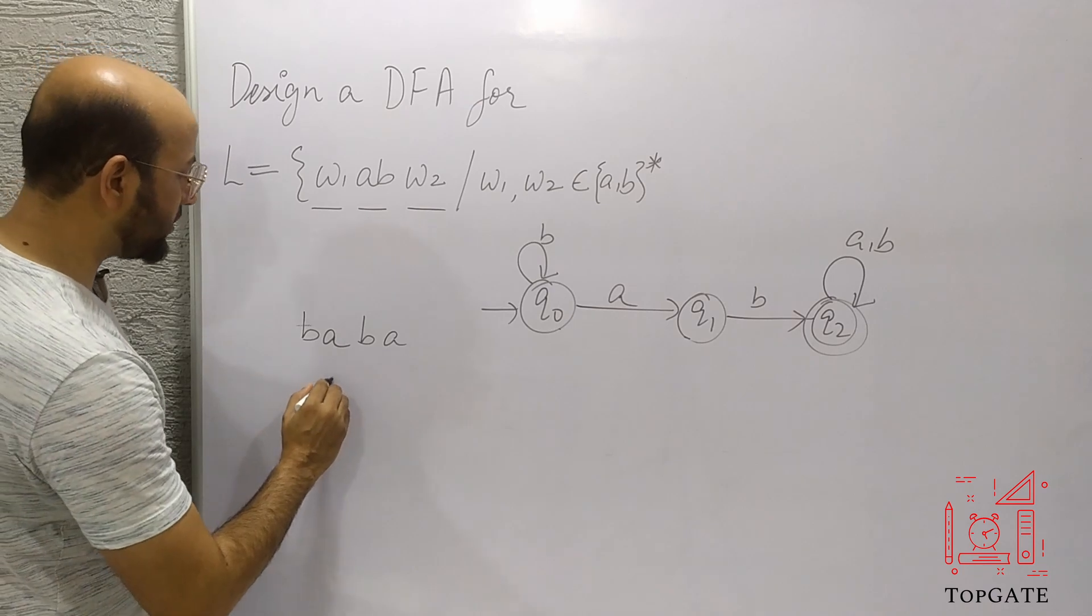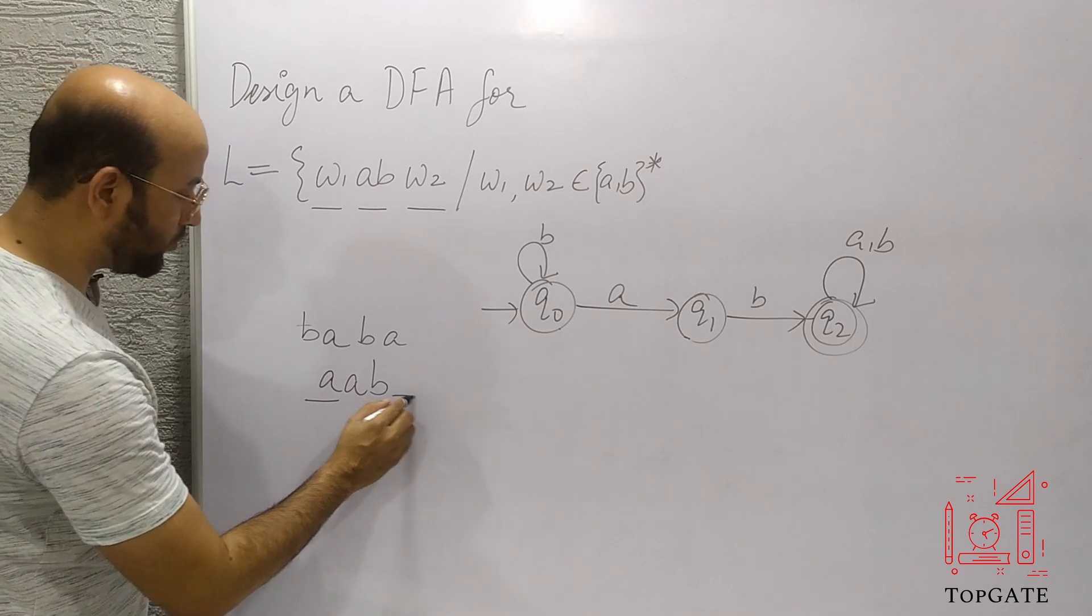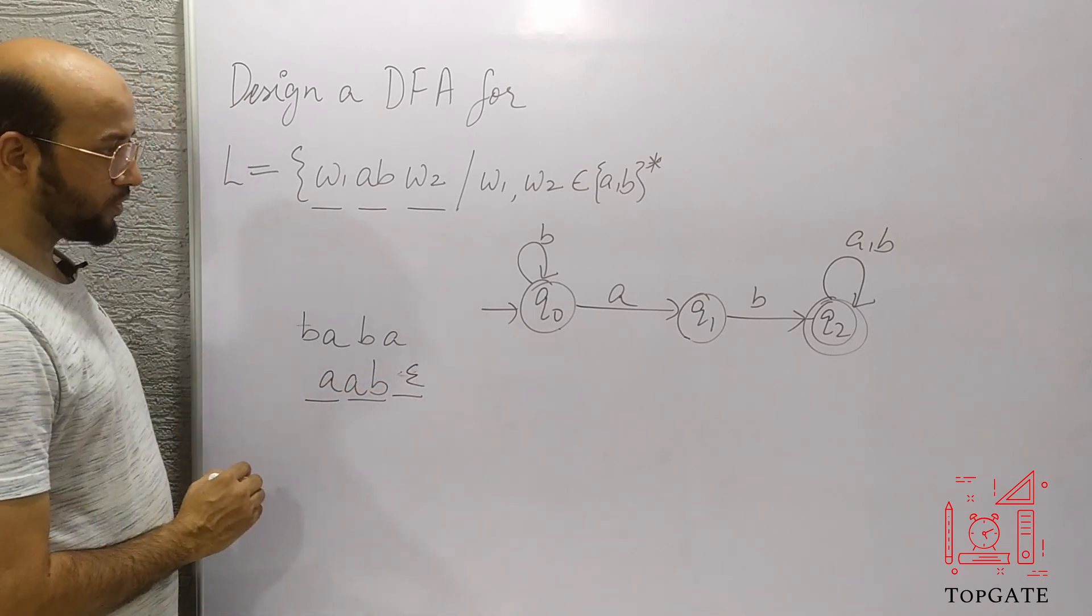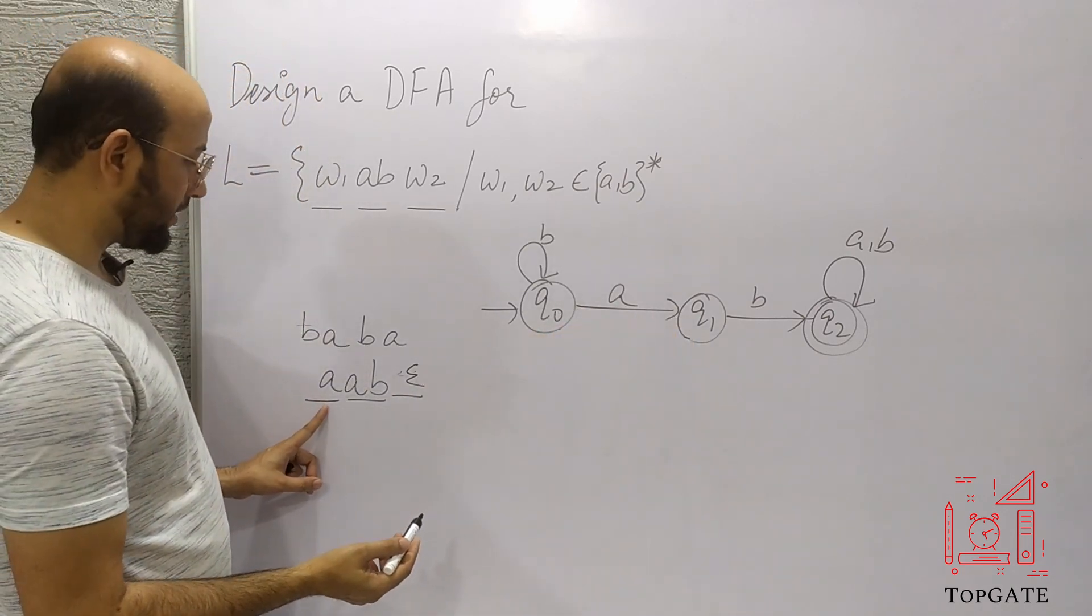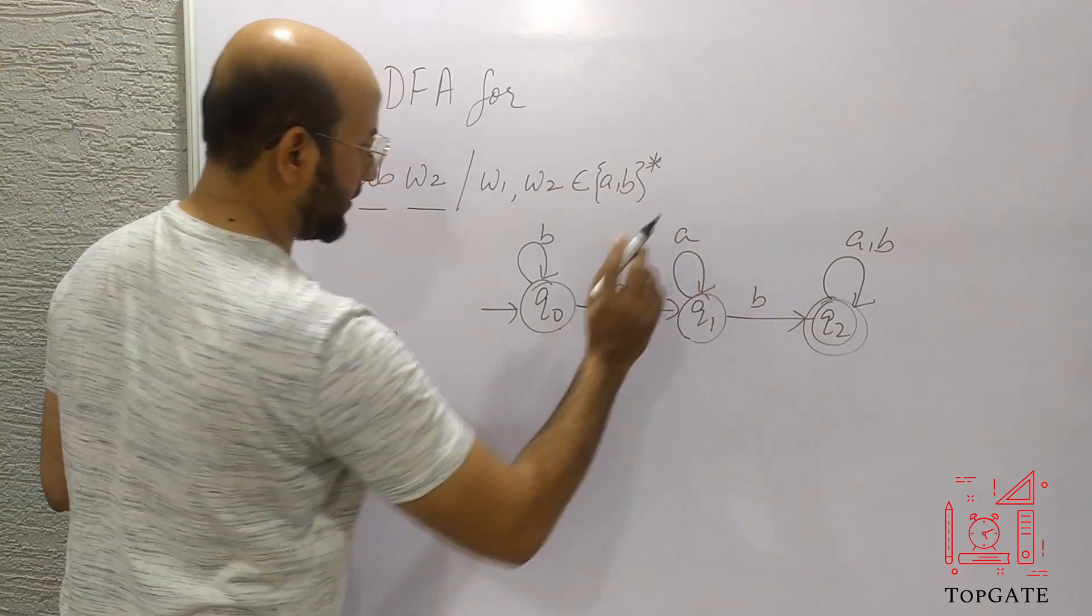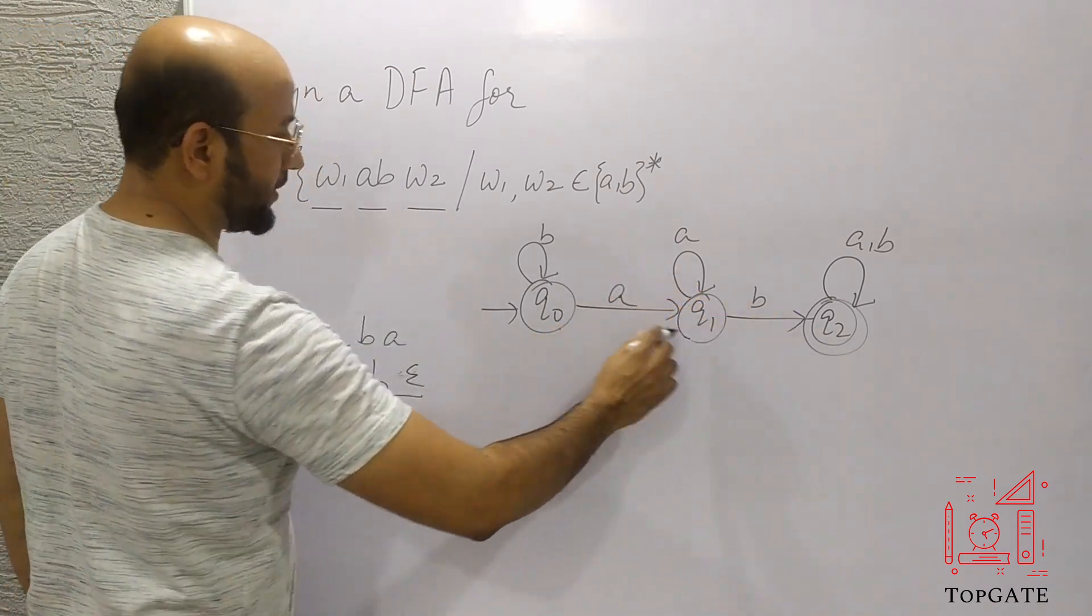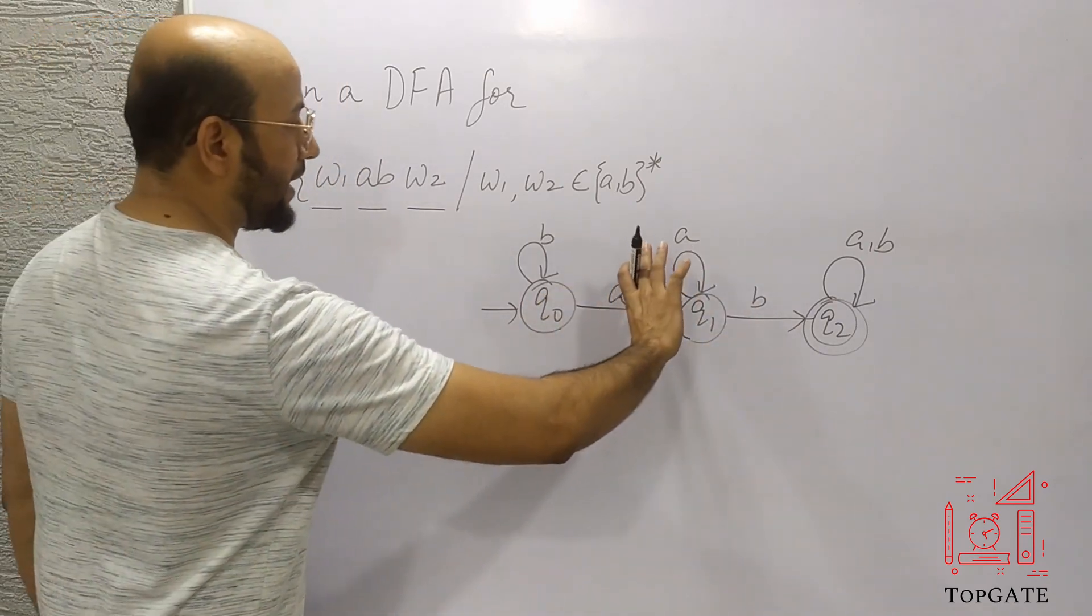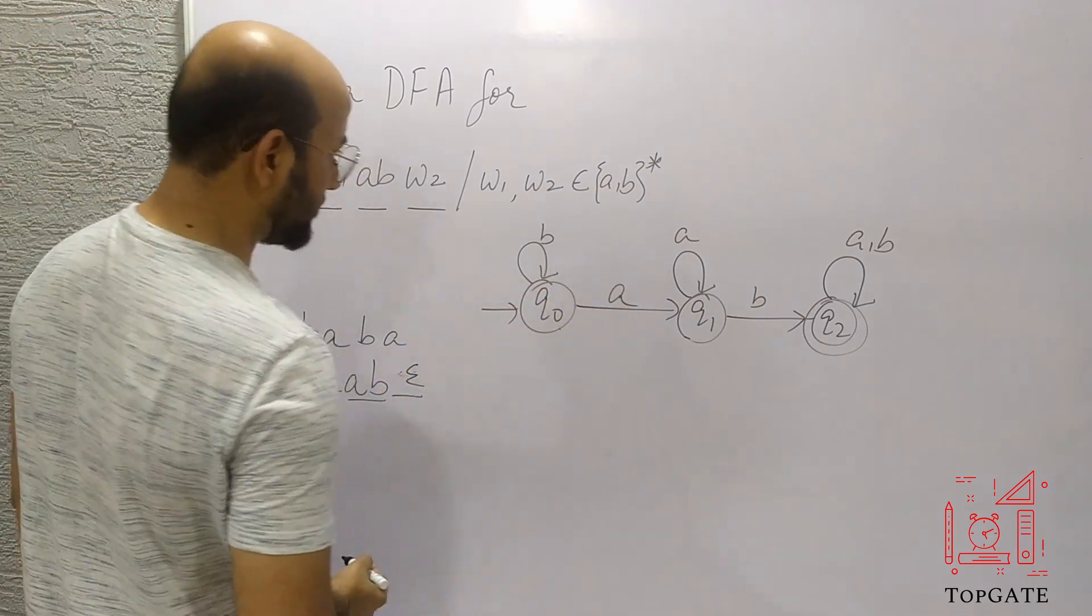Now suppose I have the string as AAB. That is, this is your W1 and W2 is null. So W2 is null and this is your AB part. So what I can have? I started my string with A. So this A is getting accepted. Again, I have AB. So I can simply add a self loop of A here. So in this way, I can accept this one. That is A, then A, then AB. Again, we are getting AB as a substring in this case. So I should get AB as a substring.